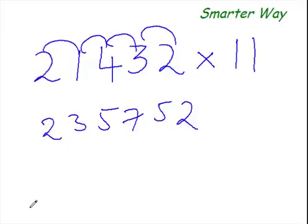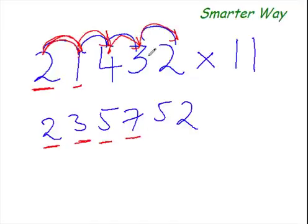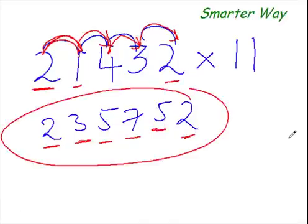Let me give you a very slow motion action replay of what I have just done. The trick is, just copy the first digit as it is. The next digit would be the sum of this digit and the next digit. So, 2 plus 1 is 3. Next digit would be sum of this digit, that is 1, and the next digit. 1 plus 4 is 5. And the next digit would be sum of this 4 and 3, that is 7. And the next one would be 3 and 2, that is 5. And copy last digit as it is. See? Isn't that simple?